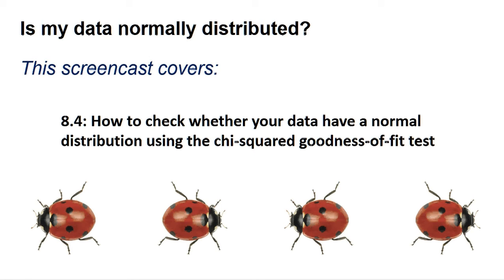Thus, researchers often like to do tests to determine if the data is normal, and we will outline some in this screencast. Please note that absolute justification that a small data set is normally distributed is almost impossible to do.